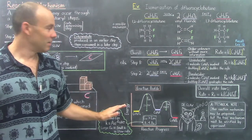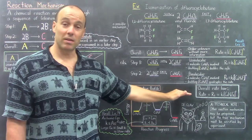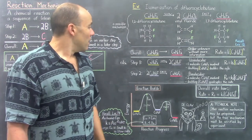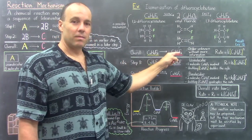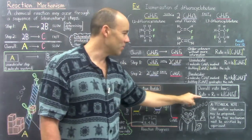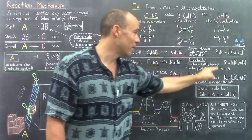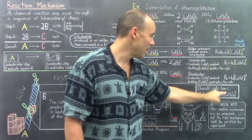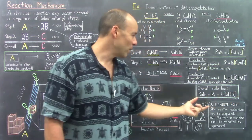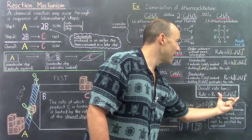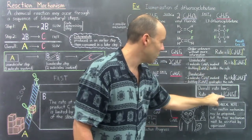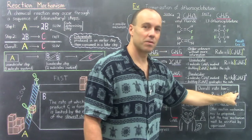Let's figure out the overall rate law. We know that the overall rate of the reaction equals the rate of the rate-determining step, so rate = R1. R1 equals its rate constant K1 times the concentration raised to the 1st power. So the overall rate law is first order, with rate constant K1.